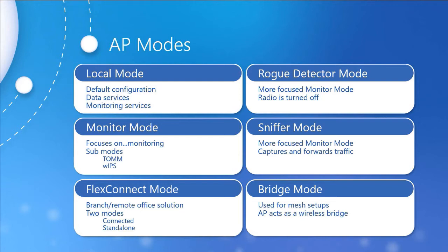Sniffer mode is kind of a more focused monitor mode. It dedicates all capabilities to sniffing a single channel in both the 2.4 GHz and the 5 GHz band. All traffic is captured and forwarded to a central server, gathering things like the timestamp, signal strength, and packet size.